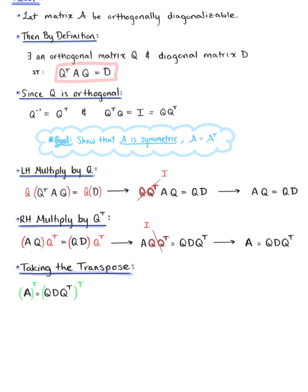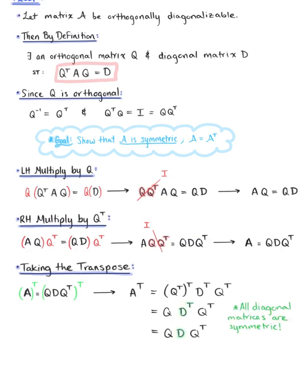Now, taking the transpose of this equation, we can show that A transpose equals A. Since A transpose is equal to matrix A, then by definition, matrix A is symmetric, which is exactly what we were looking for.